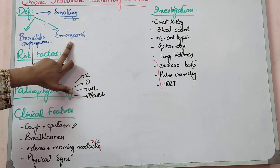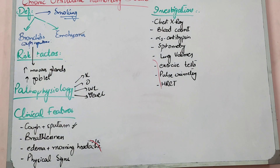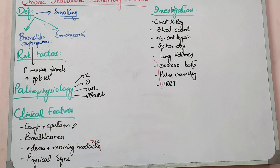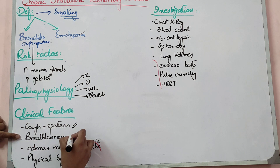In emphysema, the mucus gland contribution is not as much, but emphysema and chronic bronchitis are diseases that almost always co-exist — about 90% of the time they appear together. Breathlessness is obvious because the patient retains air and is not able to remove it; if air cannot be removed, hypoxia and breathlessness — dyspnea — will result.